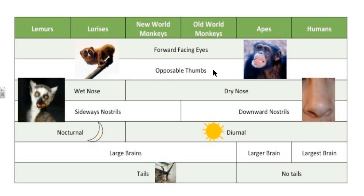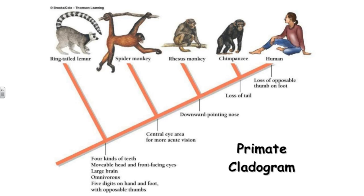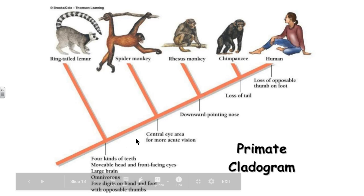Looking at the cladogram, we can see as things moved up, the first primates had four kinds of teeth, a movable head, front-facing eyes, a large brain, were omnivorous, and had five digits on hand and foot with opposable thumbs. Further up we see the development of a central eye area for more acute vision.